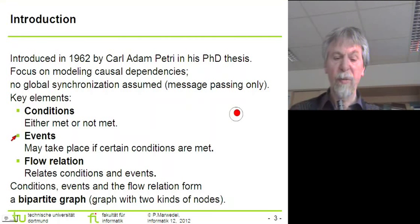As the second element we have events. Events may take place if certain conditions are met, and if they take place other conditions might start to be met. In our graphical representation of Petri Nets we will visualize events by using rectangles.